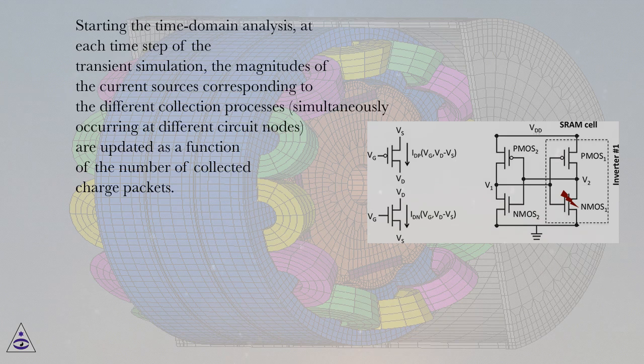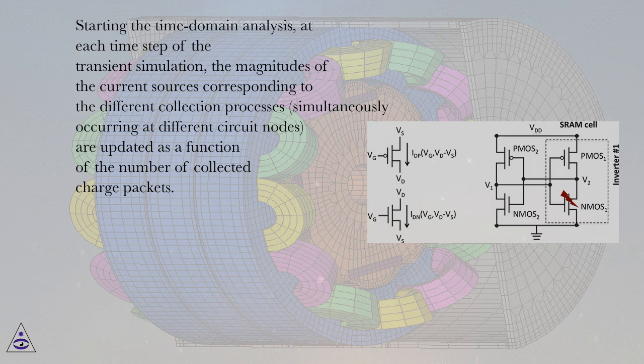Starting the time domain analysis, at each time step of the transient simulation, the magnitudes of the current sources corresponding to the different collection processes, simultaneously occurring at different circuit nodes, are updated as a function of the number of collected charge packets.